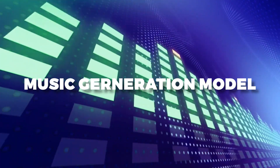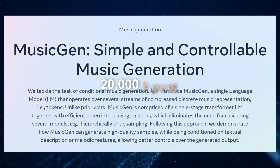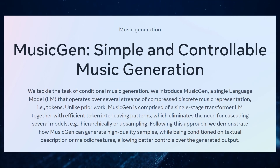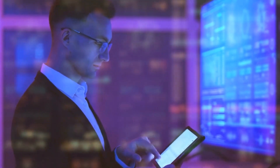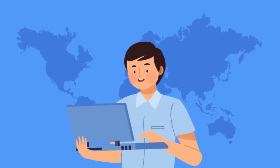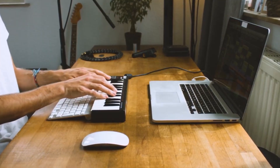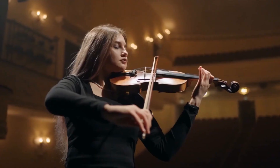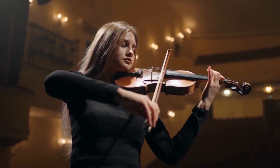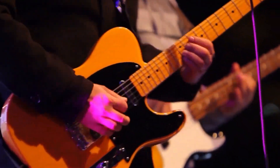Delving into its mechanics, let's start with the music generation model. This particular model underwent training using a repository of 20,000 hours of licensed music, either owned by Meta or exclusively licensed for AudioCraft. This massive dataset enables the generation of music spanning various genres, styles, moods, and instruments. Input text descriptions like 'joyful pop composition with piano and guitar' or 'melancholic classical arrangement featuring violin and cello' yield music that aligns with the specifications.